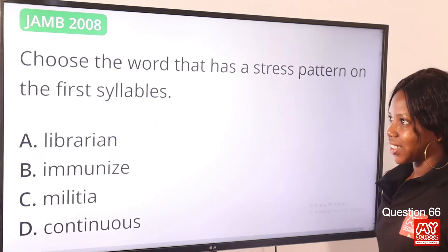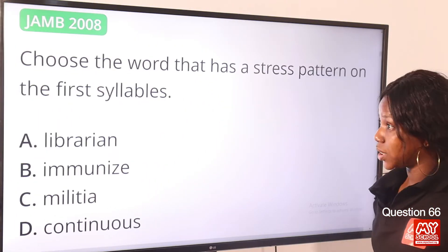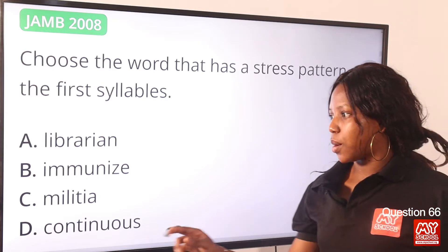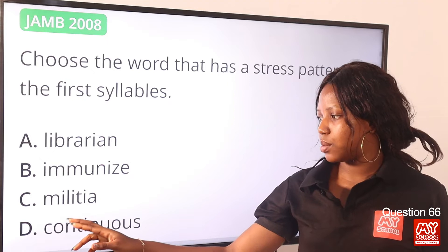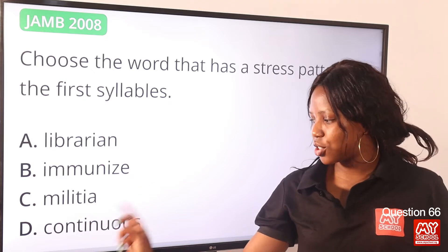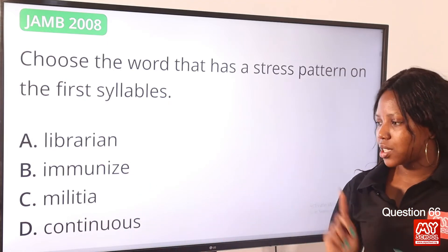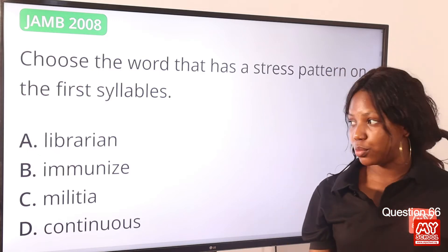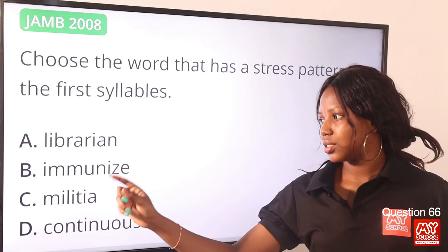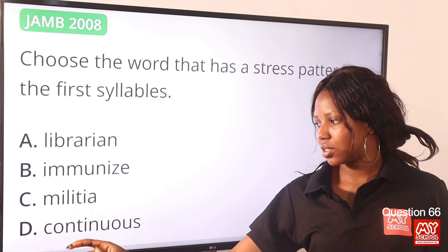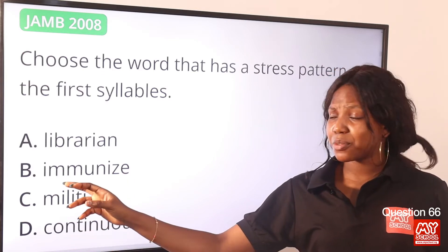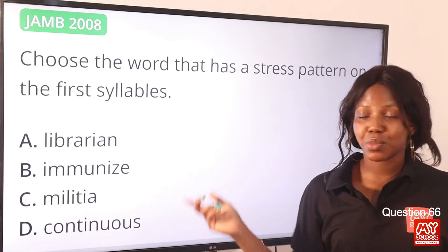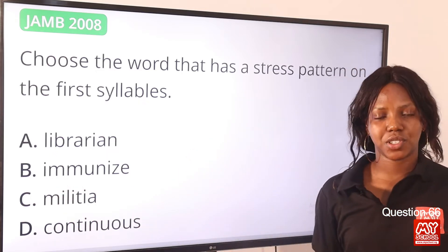Question 66. Choose the word that has a stress pattern on the first syllable. Option A: librarian. Option B: immunize. Option C: militia. Option D: continuous. Options A, C, and D have the stress on the second syllable — librarian, militia, continuous. Except for option B, which has the stress on the first syllable — immunize. So option B is the correct answer.